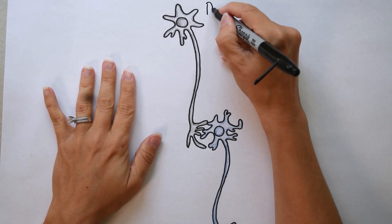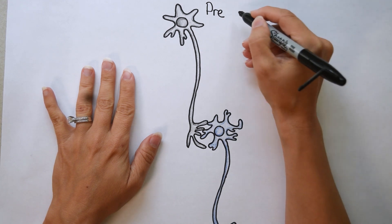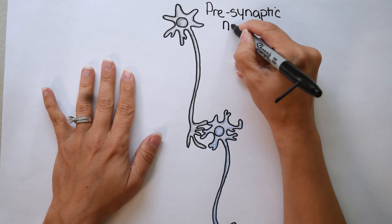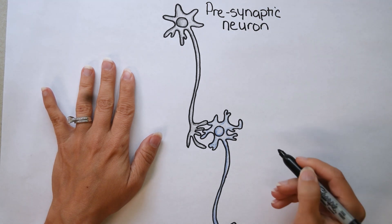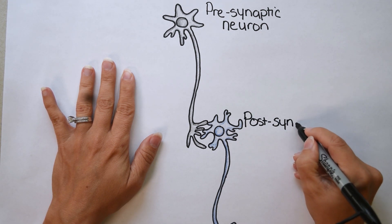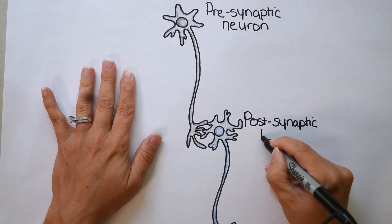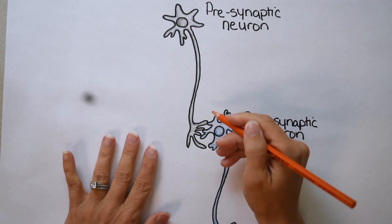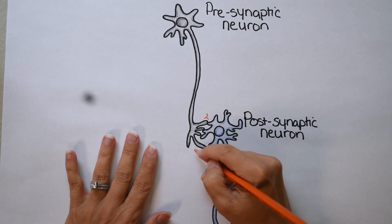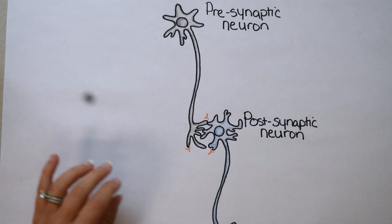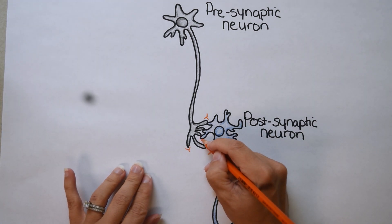Autoimmune encephalitis happens in the brain, and that means I need to give a quick overview of the two different types of neurons we need to talk about. The first one is the presynaptic neuron, and then the second one is the postsynaptic neuron. The presynaptic neuron is the one that sends signals to the postsynaptic neuron. These signals can either be excitatory or inhibitory, and the sum of this connection is how you move, how you think, how you recall memories. That's autoimmune encephalitis — antibodies stuck in between the presynaptic and postsynaptic neuron.